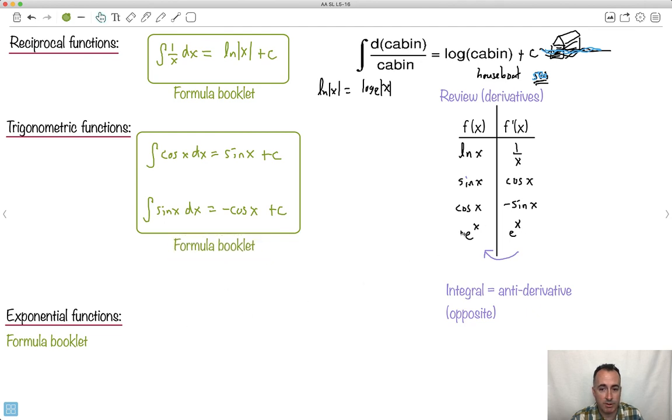And even better, if you start with e to the x, you end up with e to the x. So let's write that one down. The integral of e to the x dx is just e to the x plus C. But maybe that helps you to remember. That dumb joke helps you to remember to always add the plus C, because you forgot the C.